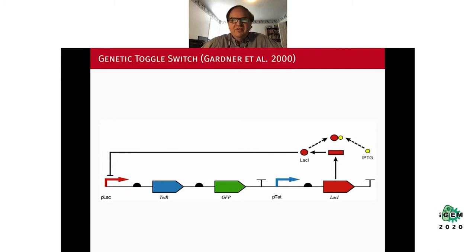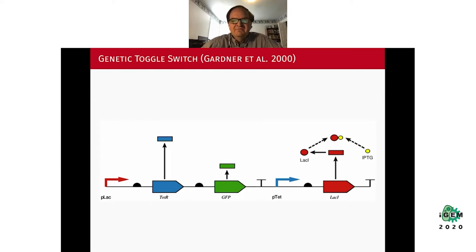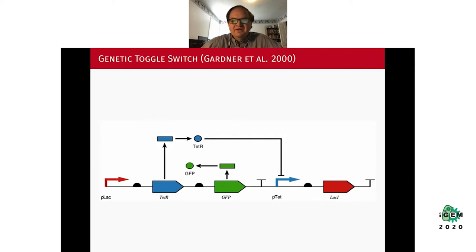If you want to turn the switch on, you add a small molecule called IPTG. When you add that small molecule it binds to LacI, prevents LacI from repressing the pLac promoter, and you start getting transcription of the TetR and GFP genes. The TetR protein then binds to pTet and represses transcription of LacI. At that point you stop getting production of LacI, you are getting GFP, all your cells are glowing green, and the switch is on.